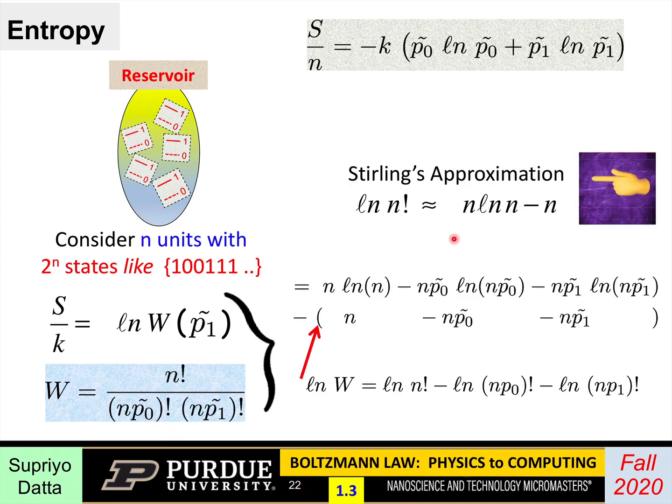Now, next what we use is something called Sterling's approximation, which is that when n is large, remember, this equivalence we are trying to prove only applies for large n. So when n is large, you can write the log of factorial n as n log n minus n. So instead of log of factorial n, we can write n log n minus n. Similarly, instead of log of np0 factorial, we can write np0 log np0 minus np0. Similarly, log of np1 factorial becomes np1 log np1 minus np1. So we are applying this Sterling's approximation to each of the three things.